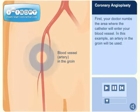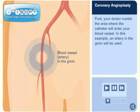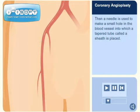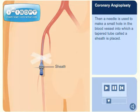First, your doctor numbs the area where the catheter will enter your blood vessel. In this example, an artery in the groin will be used. Then a needle is used to make a small hole in the blood vessel into which a tapered tube, called a sheath, is placed.